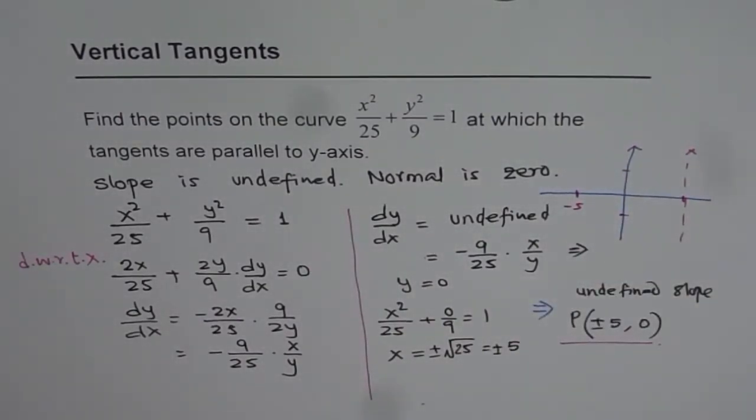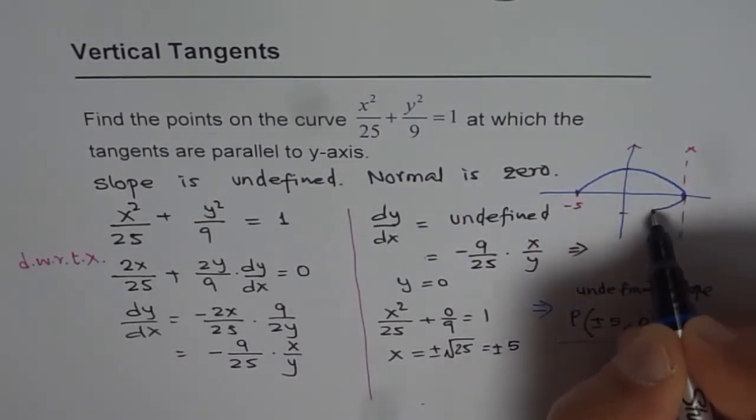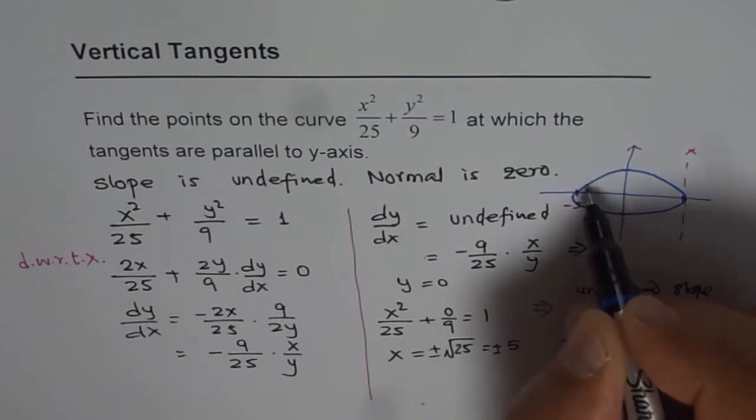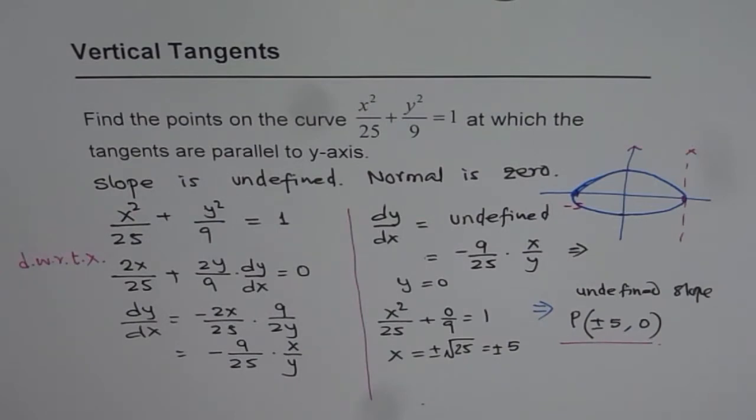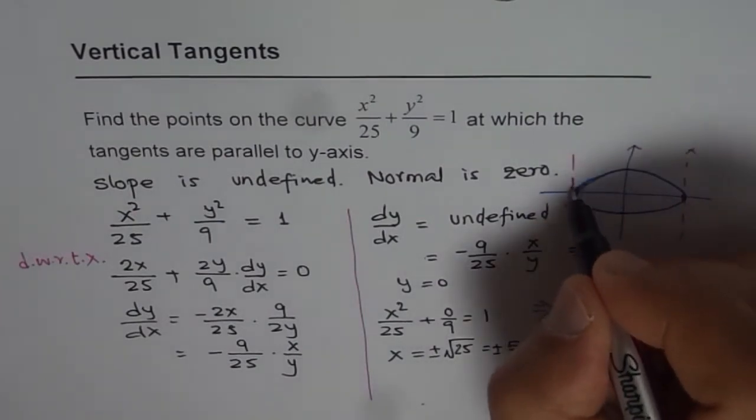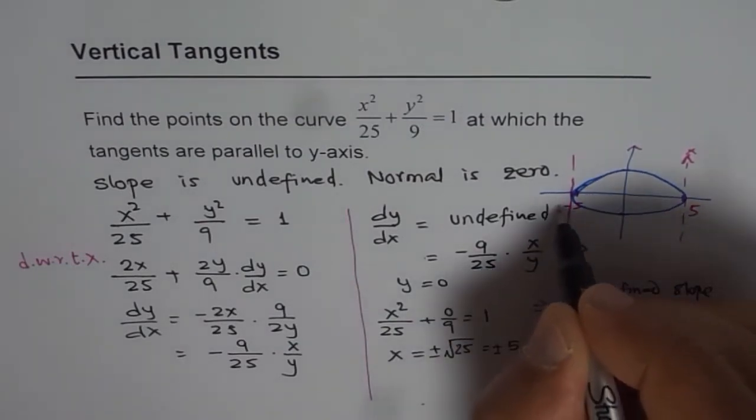Now if I join these I get ellipse which is kind of like this. So that is my ellipse. Now as you can see from here the vertical tangents are indeed at x intercepts. Do you see that? And these points are plus and minus 5.